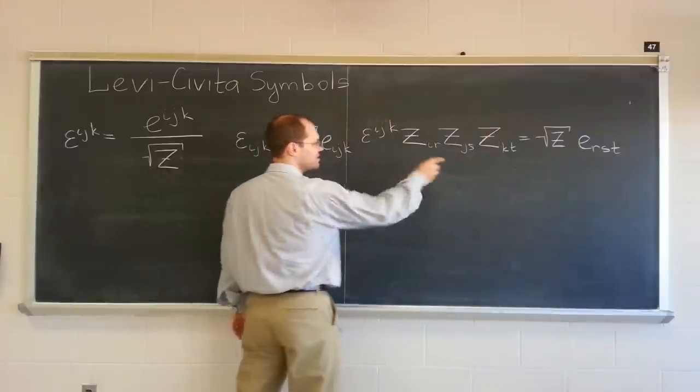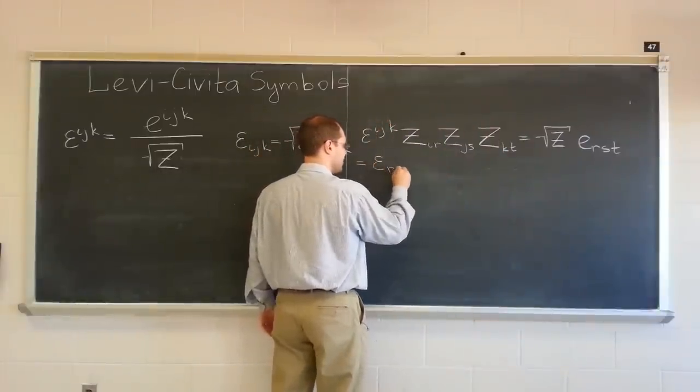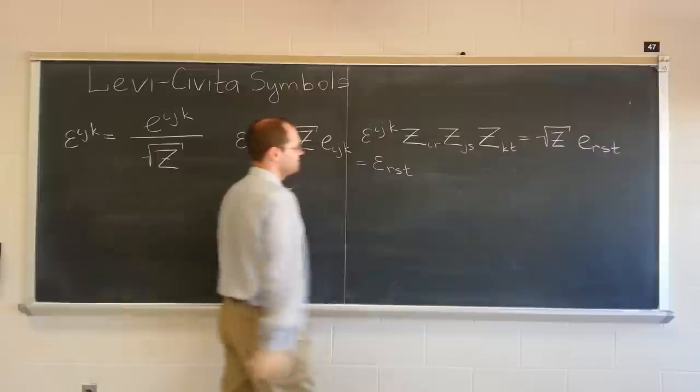Leaving us with the square root of z on top and e_rst. So that's what we would get. And of course, that is epsilon_rst. So there you go.